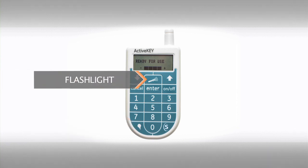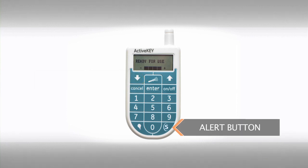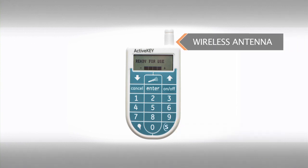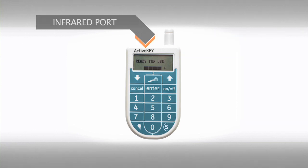There is also a backlight that can be used to light up the entire keypad and your window screen. The flashlight feature is perfect for finding keyboxes in low light. The ActiveKey also features an alert button that will allow you to send text messages to the contacts of your choice. The ActiveKey has a wireless antenna that allows you to keep your key updated by cellular contact. The infrared port that you use to communicate with keyboxes is located directly next to the wireless antenna.